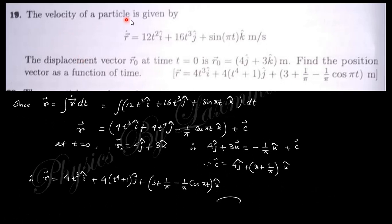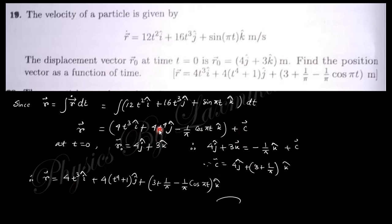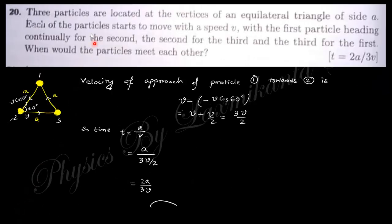The next question gives the velocity of a particle and initial displacement r0 at t = 0. Find the position vector as a function of time. Integrating the velocity with respect to time gives the position vector plus a constant. The constant is determined from the initial condition r(0) = r0. Substituting back, the i_cap term remains as is, the j_cap term becomes 4t⁴+4 (with 4 factored out), and k_cap is added accordingly.